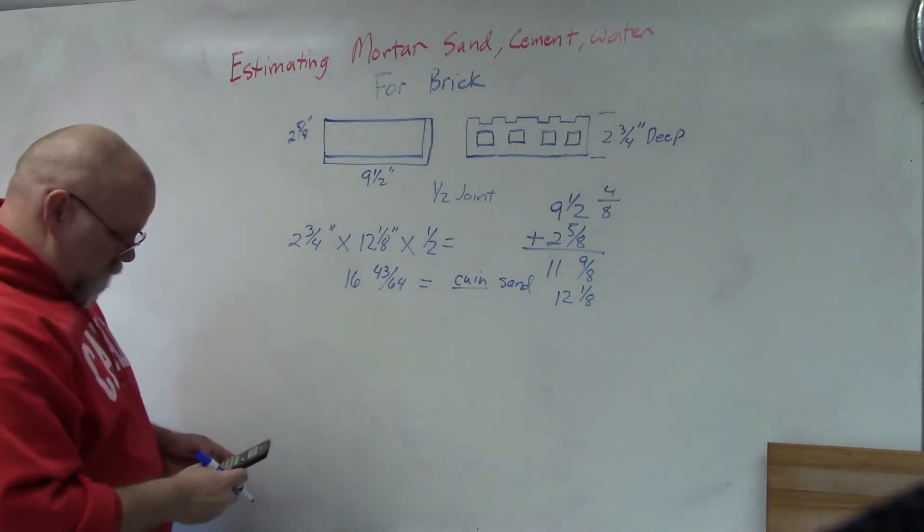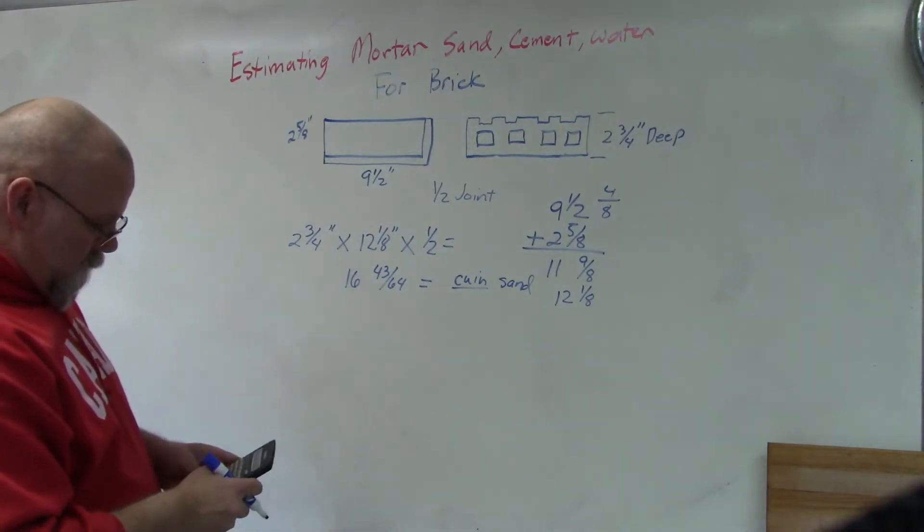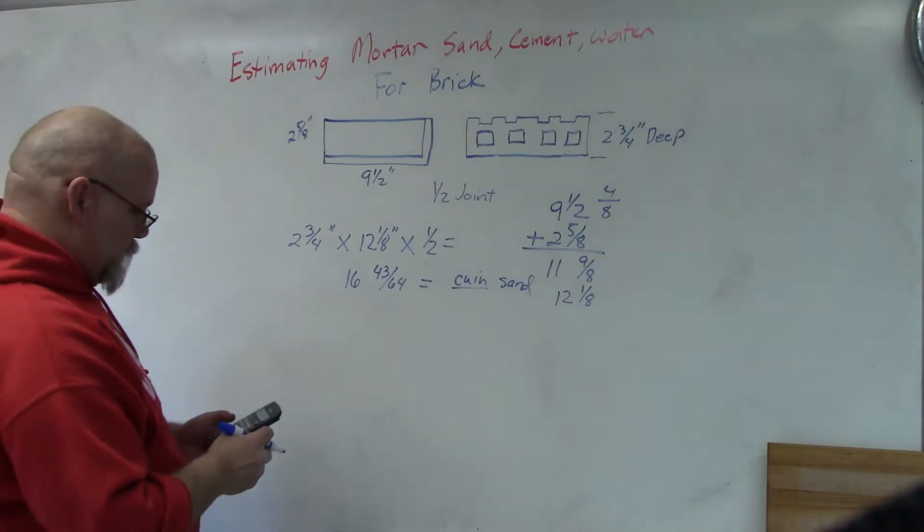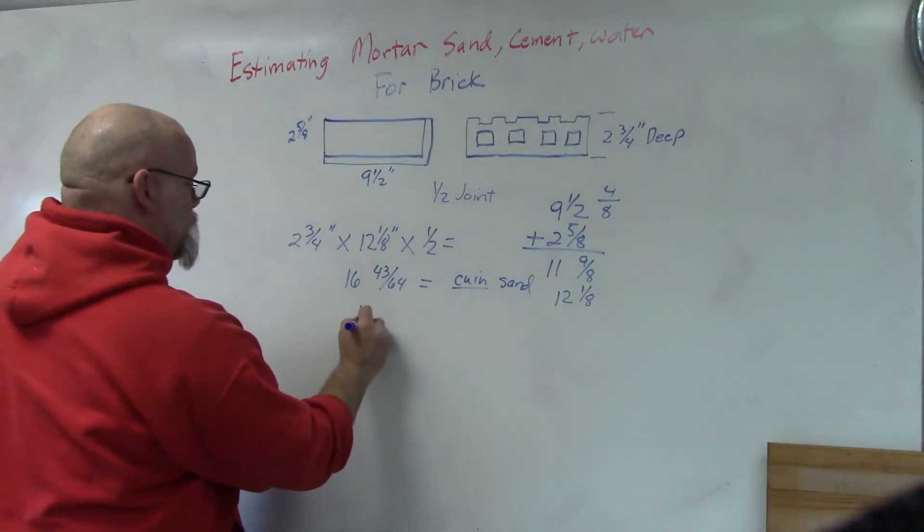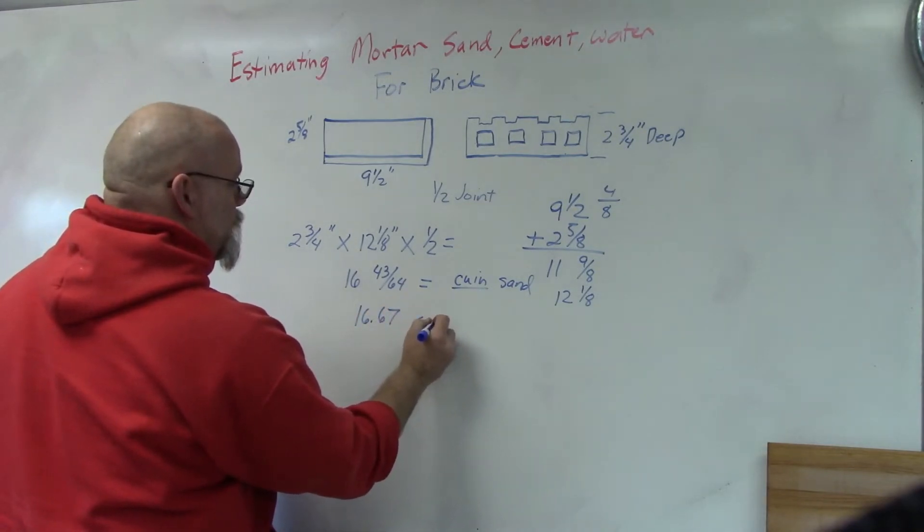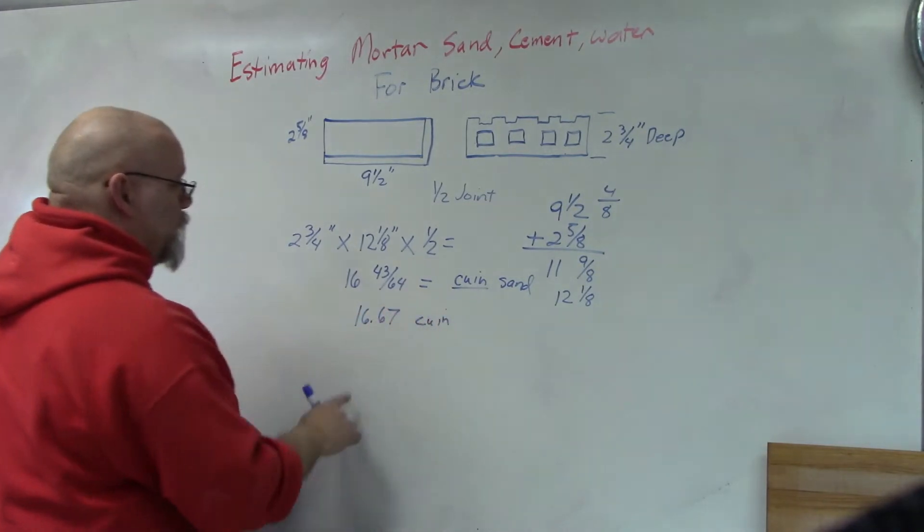Now if I wanted to change that to a decimal, just take 43 divided by 64 and I get 0.67, so I get 16.67 cubic inches.